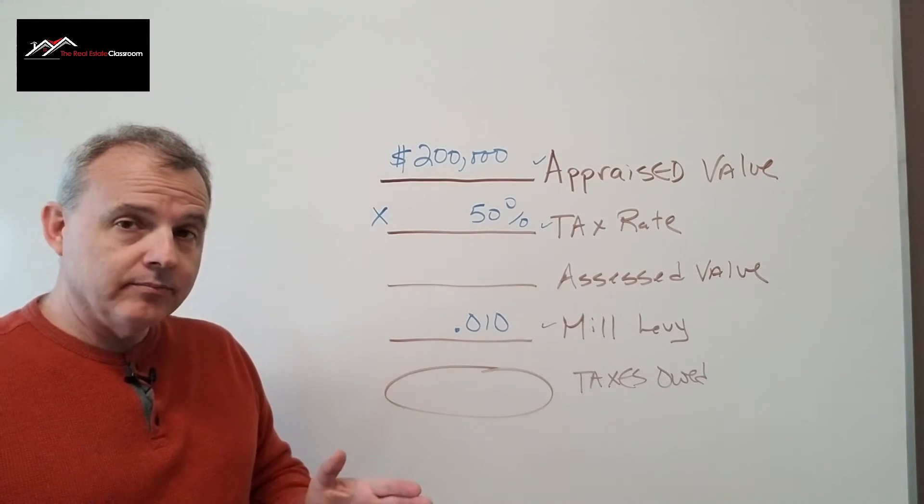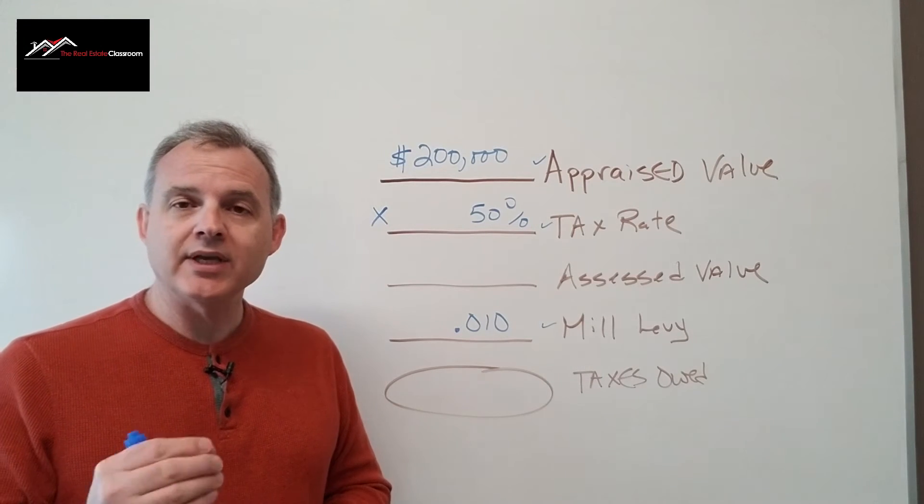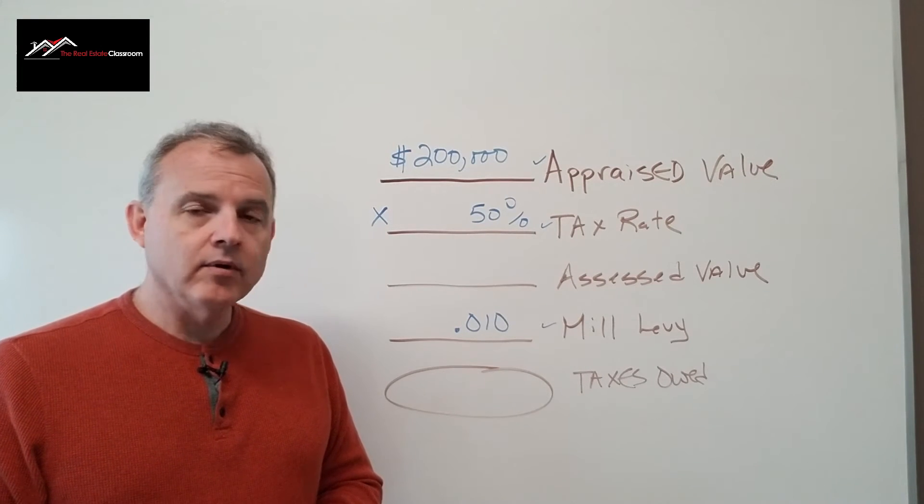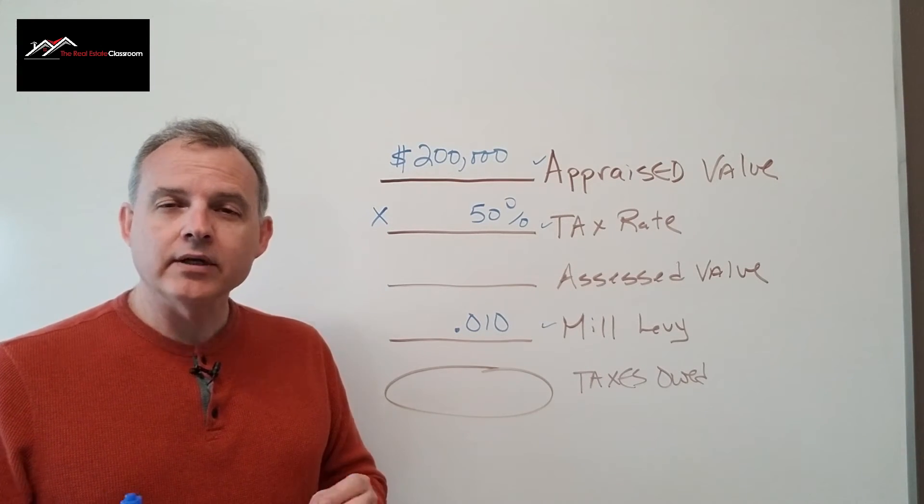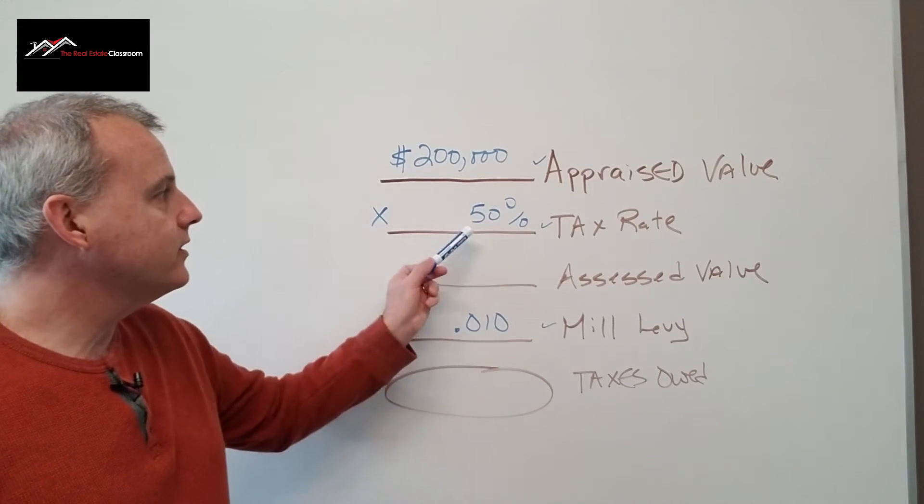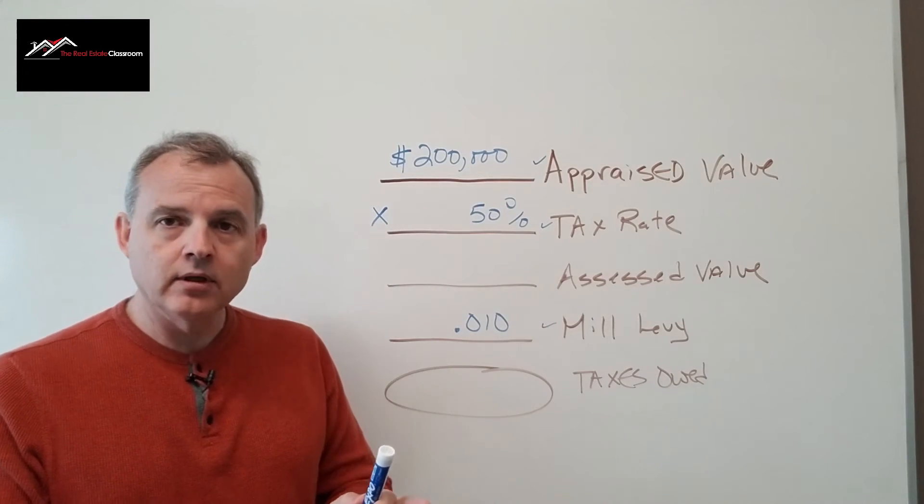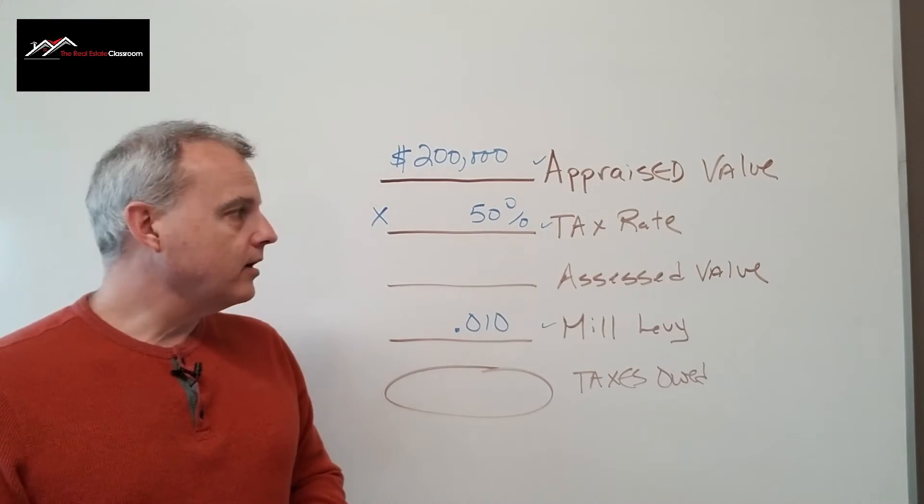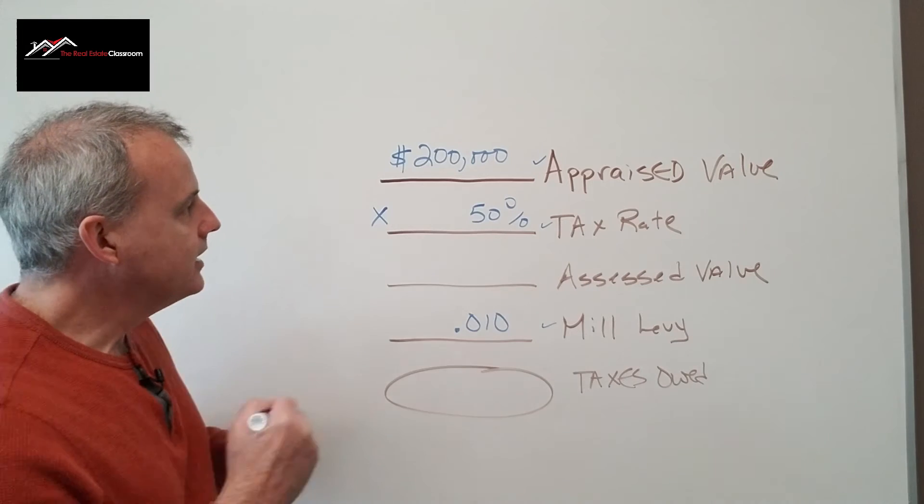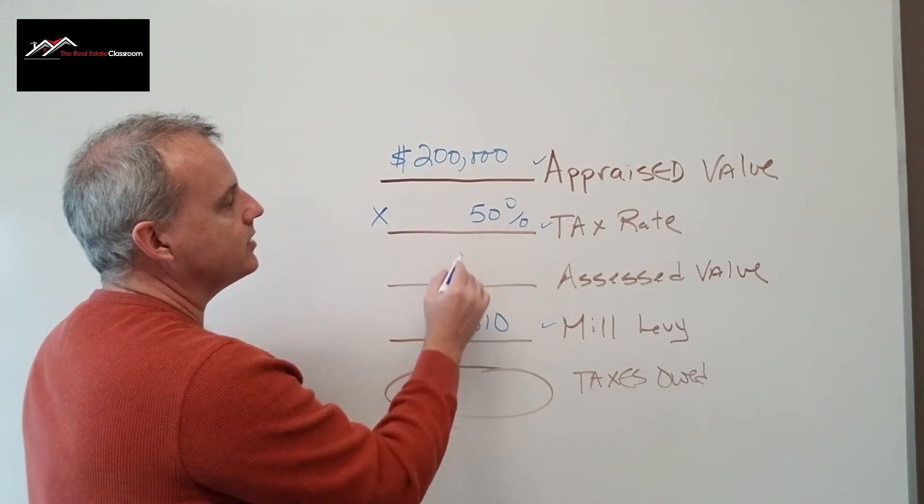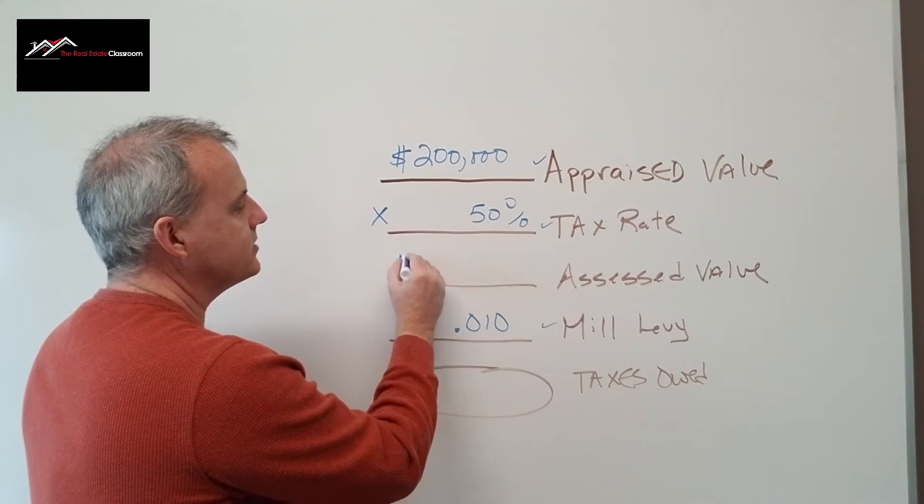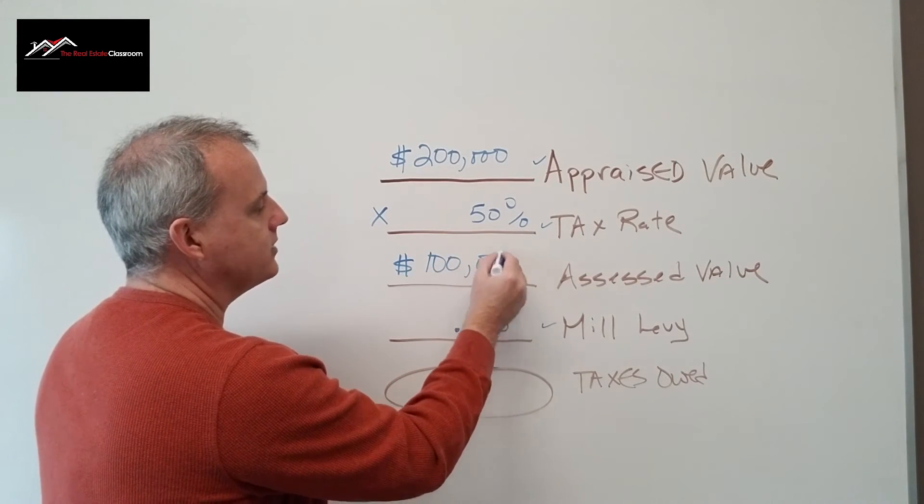Or if you have a very simple calculator—many states won't allow you to have anything other than a very simple calculator when you take your exam—you're going to need to know how to convert this. So it'd be $200,000 multiplied by 0.50. We take $200,000 multiplied by 50%, which gives us an assessed value of $100,000.